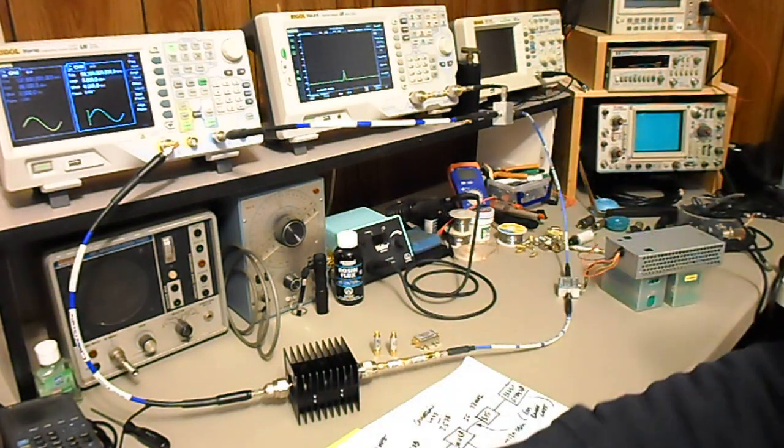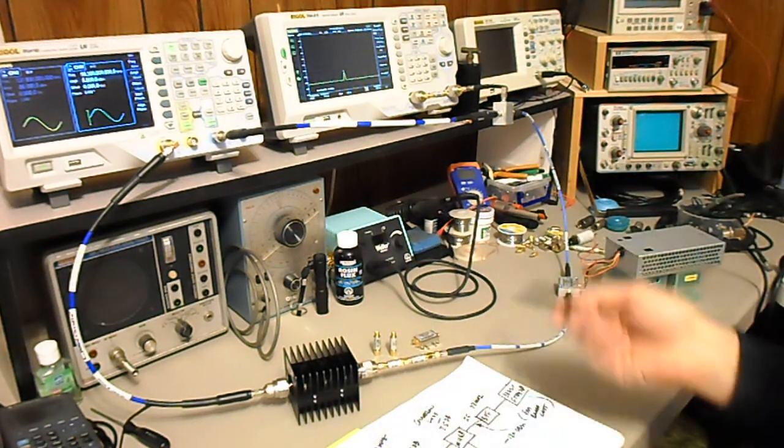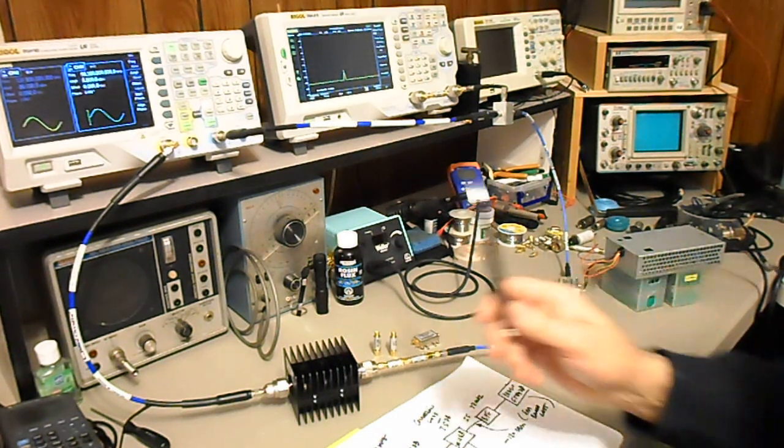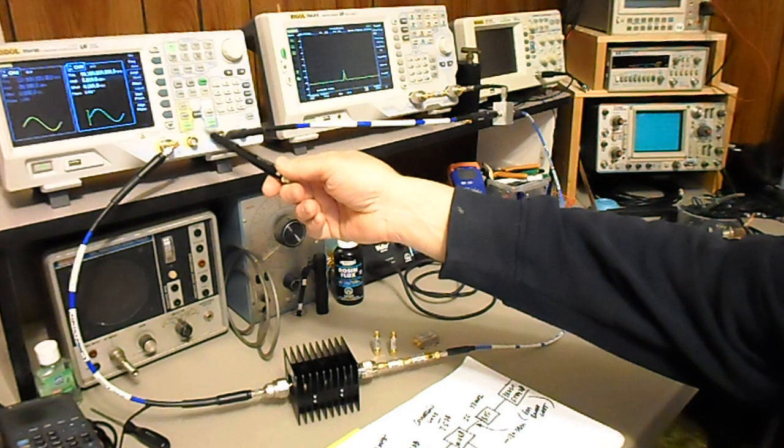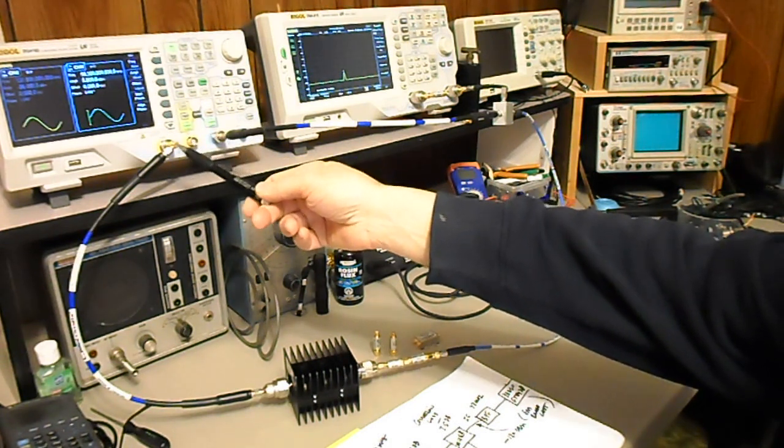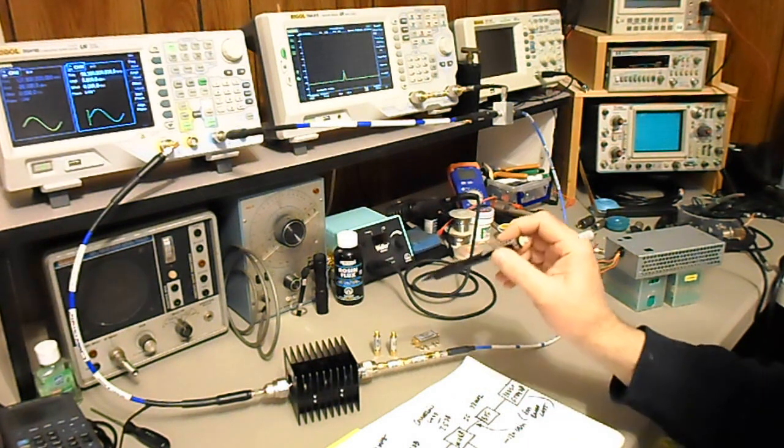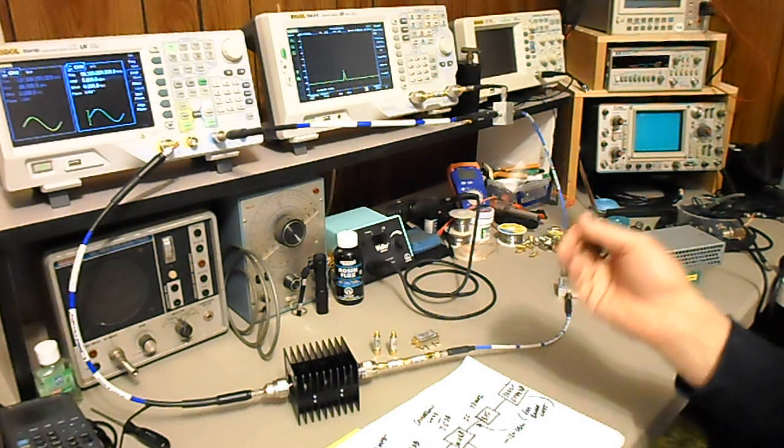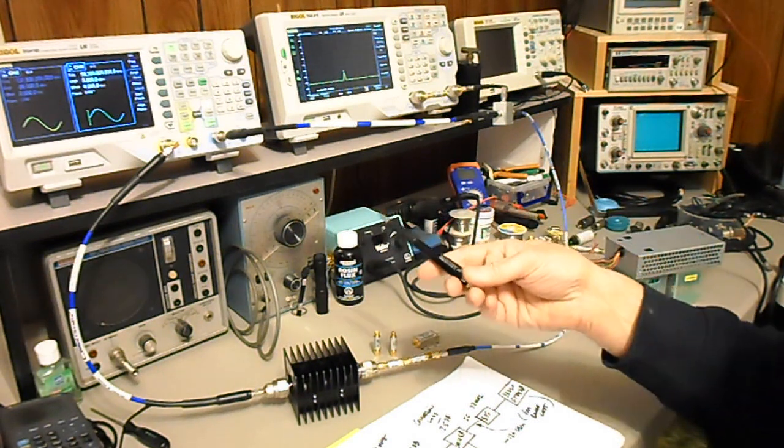So what we've got here is this is kind of a test setup, really. So I got our arbitrary waveform generator providing a signal to a bunch of attenuators. So I need to get a really, really low signal amplitude for the amplifier to simulate a weak signal coming from a satellite in orbit.